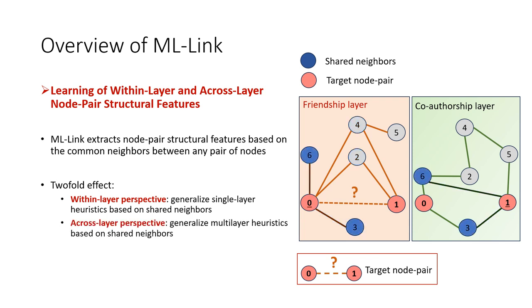From an across-layer perspective, we capture multilayer interactions by considering the target nodes when they belong to different layers. For example, when node 0 is in the friendship layer and node 1 is in the co-authorship layer, their shared nodes are 6 and 3. This allows us to generalize multilayer topological heuristics, such as multiplex Adamic-Adar.